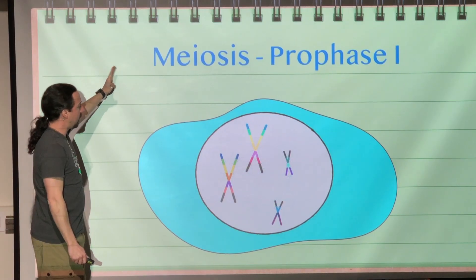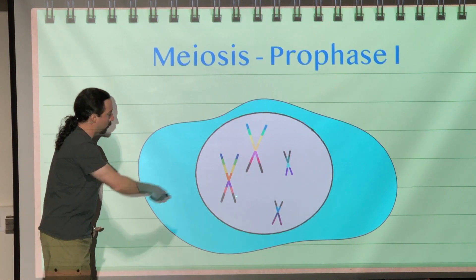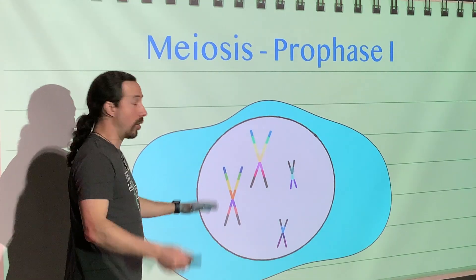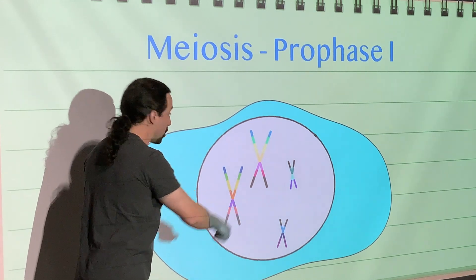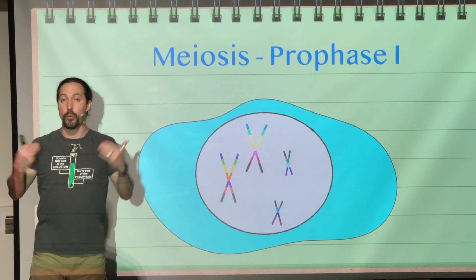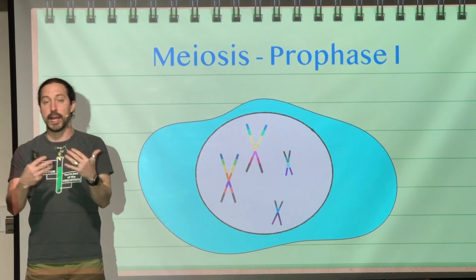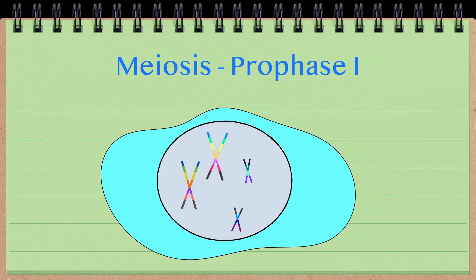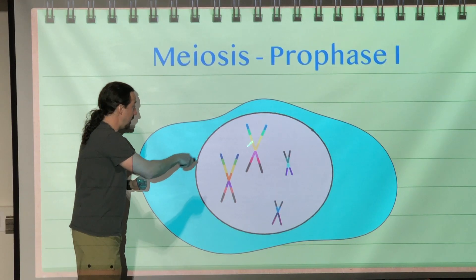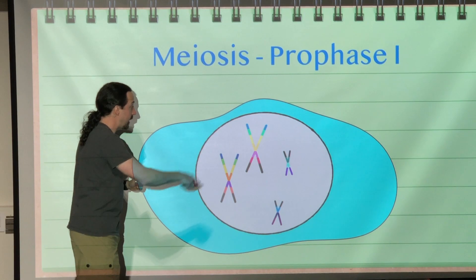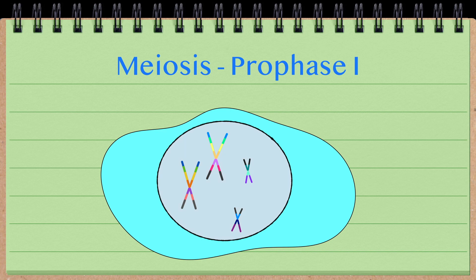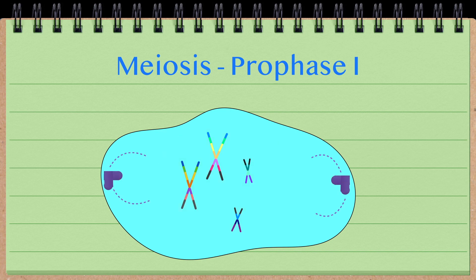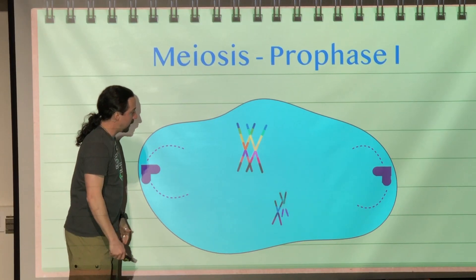Our cell here has four chromosomes. Of these four chromosomes, we have a homologous pair here and a homologous pair here — two pairs of chromosomes within our cell. Our cell is a diploid cell. Each of the pairs of chromosomes have the same genes, but they have different alleles. They are going to form a tetrad — this would be a tetrad, as would this.